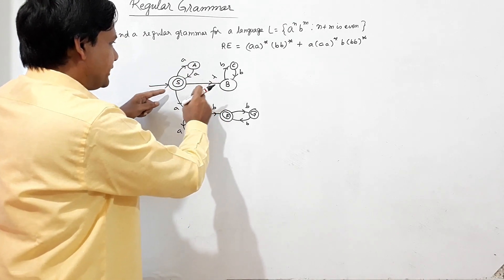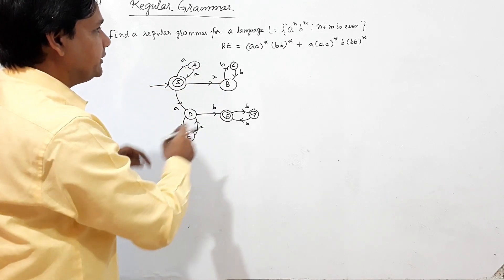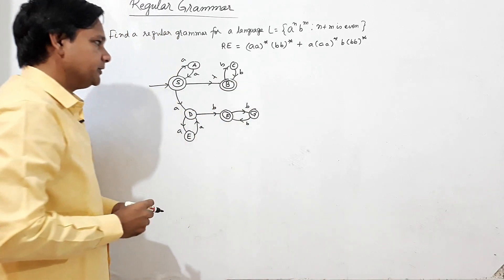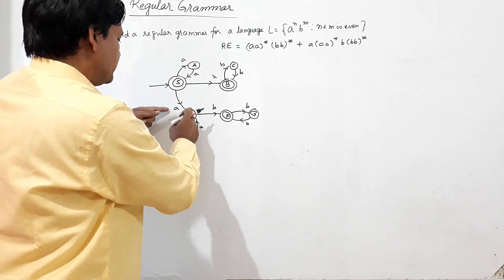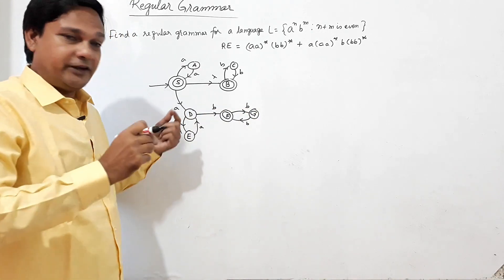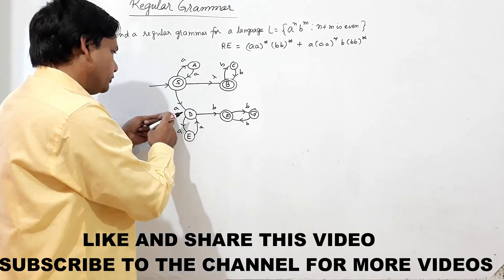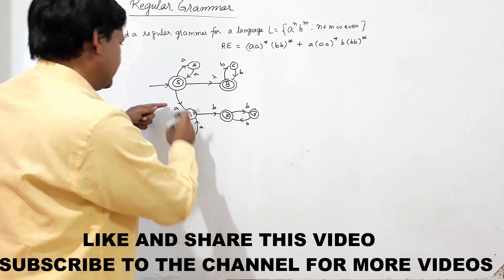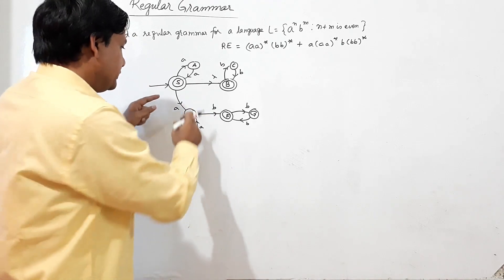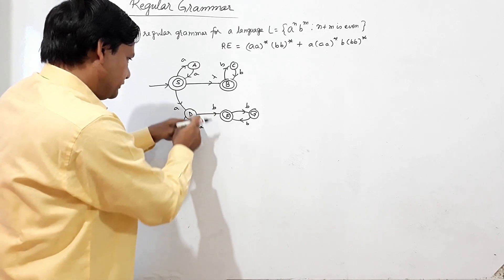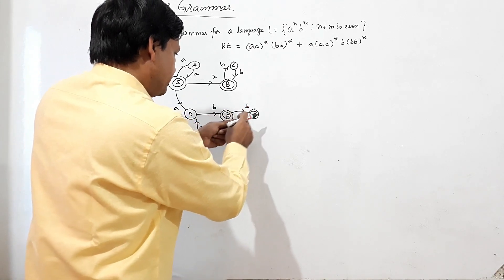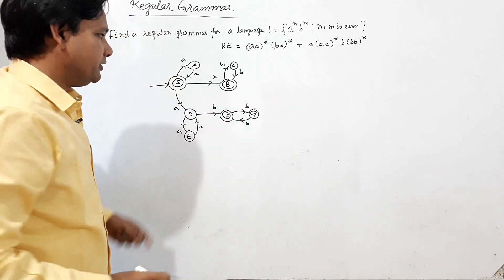Lambda is being accepted here. If b comes, any number of b's should also be accepted, so this should also be a final state. If one a is coming and the number of a's is odd, then the number of b's should also be odd. If a's or b's count is odd, it will be a final state. One a plus one b equals two — that's even. Three a's plus one b equals four — that's even, and so it continues.